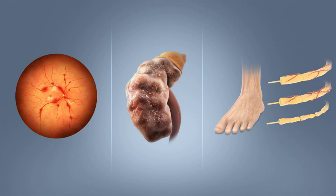Several other groups of drugs may also decrease blood sugar in type 2 diabetes. These include agents that increase insulin release, agents that decrease absorption of sugar from the intestines, and agents that make the body more sensitive to insulin. When insulin is used in type 2 diabetes, a long-acting formulation is usually added initially while continuing oral medications, and doses of insulin are then increased to effect.